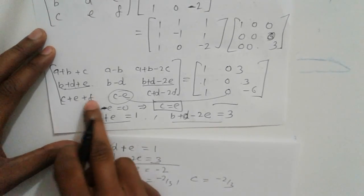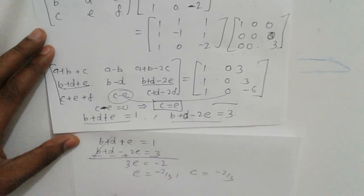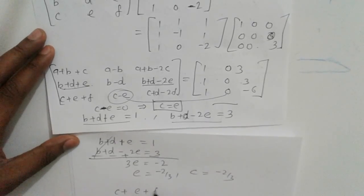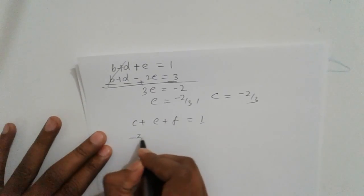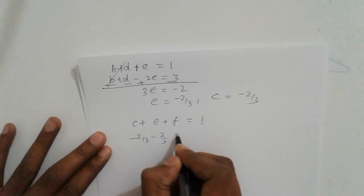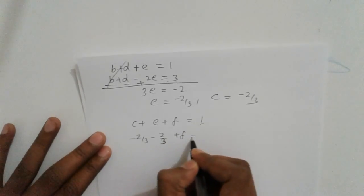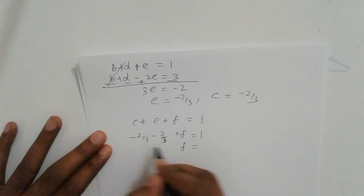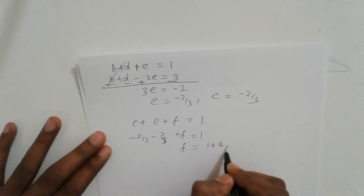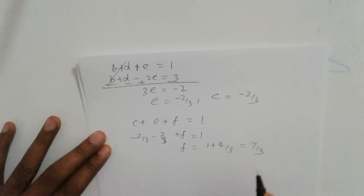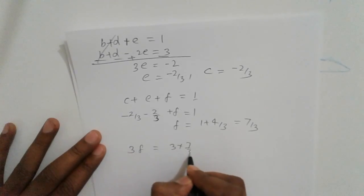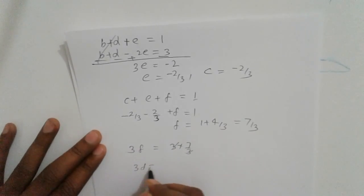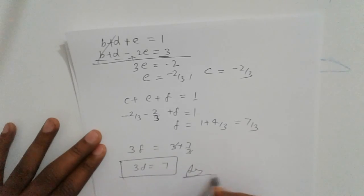Next, comparing to the element c, e, and f at position giving value 1: c + e + f = 1. Putting the values: -2/3 - 2/3 + f = 1. So f = 1 + 4/3 = 7/3. Therefore 3f = 7. So that is your answer.